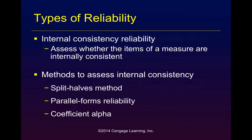Split-halves methods of reliability assess the correlation of subscores among different subsets or halves of the items. Parallel forms methods require constructing a second measuring instrument thought to be equivalent to the first. Finally, coefficient alpha is the most common and powerful method. Coefficient alpha at about .90 or above is considered excellent, whereas .80 to .89 is considered good.